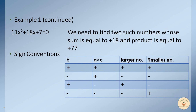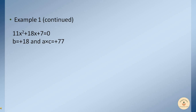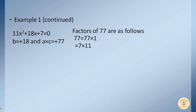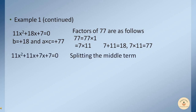Our two numbers must have sum +18 and product +77. To find them, we factorize 77: it can be 1×77 or 7×11. Looking carefully, 7 and 11 are the two numbers that when added give 18 and when multiplied give 77. We use these to split the middle term, so the equation becomes 11x² + 11x + 7x + 7 = 0. We have simply replaced 18x with 11x and 7x.